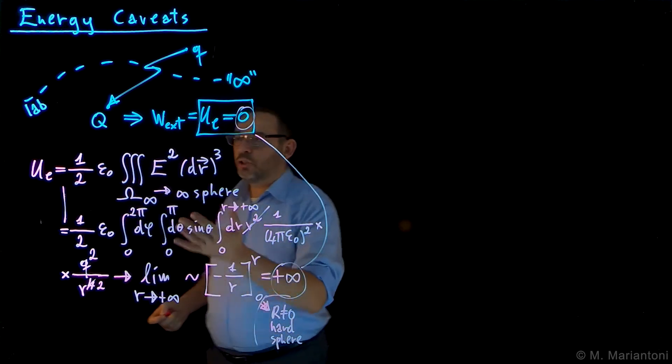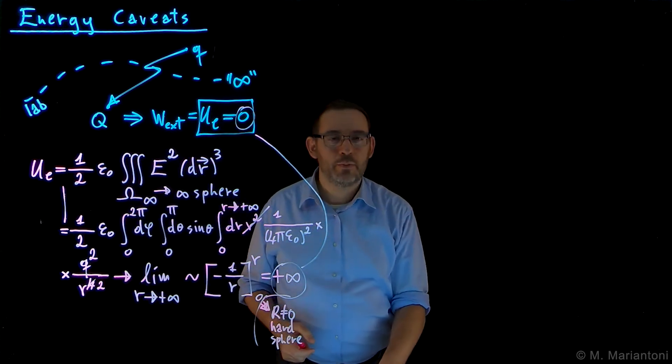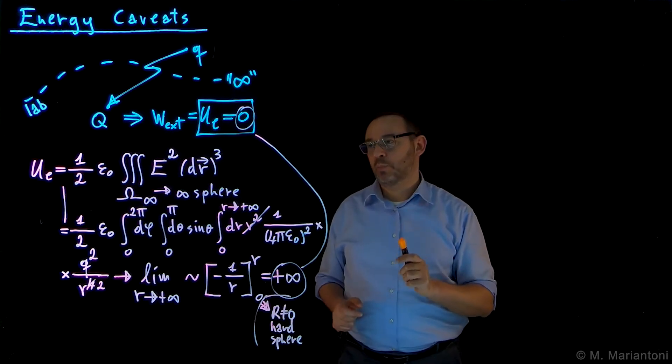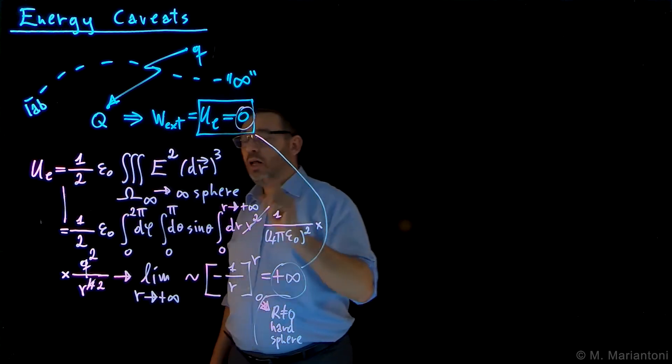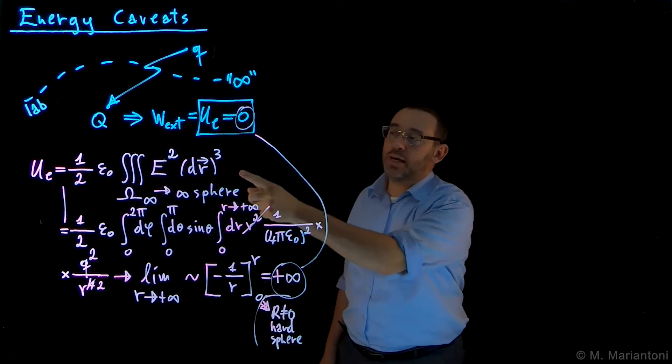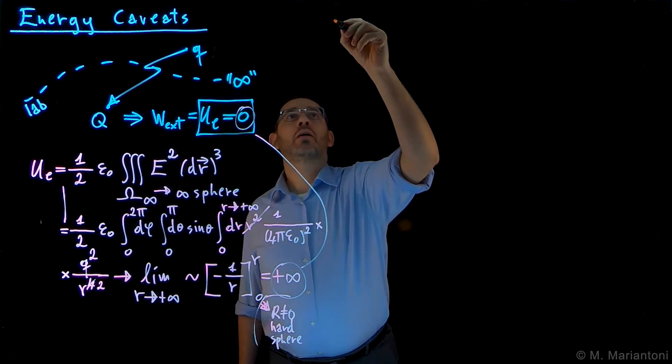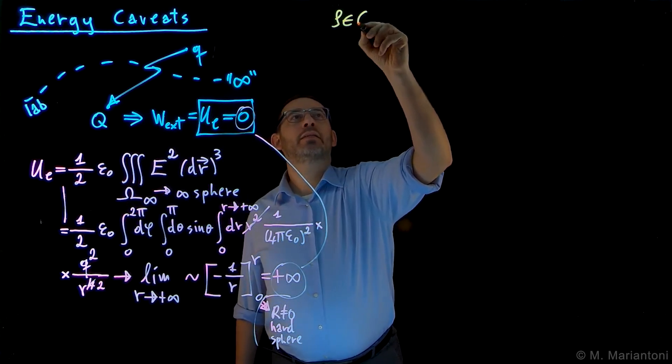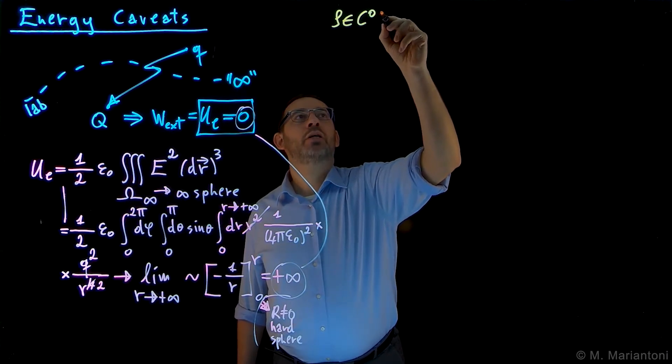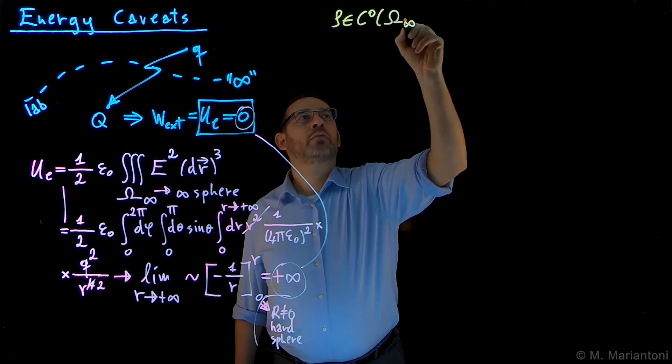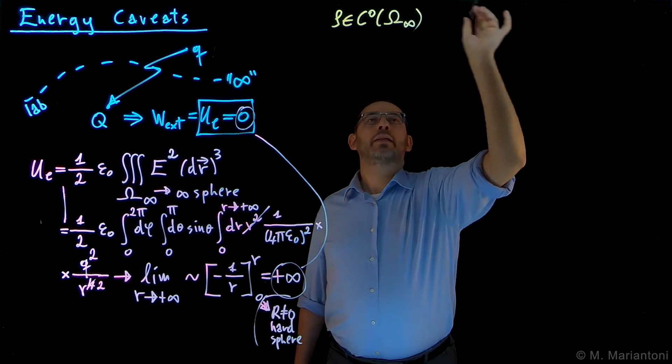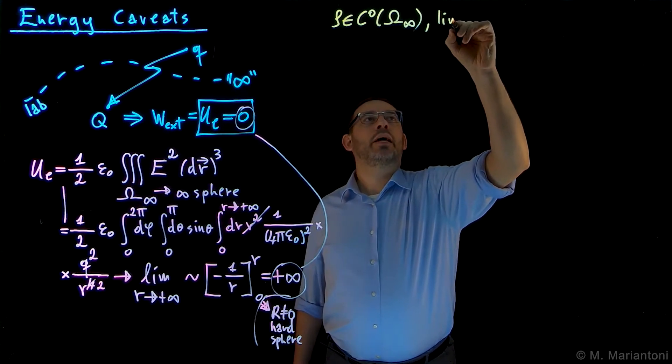Obviously this approach clearly gives the wrong result. Why is it so? Because, as I said, the only scenario when you can use this expression for electrostatic energy is when Rho is well defined—it's a C0, it's a continuous function in the entire space, omega infinite, and is also limited in that space.